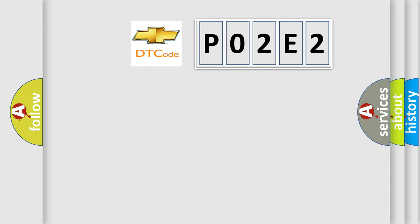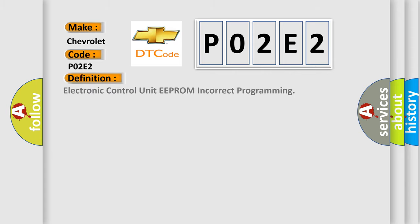So, what does the diagnostic trouble code P02E2 interpret specifically for Chevrolet car manufacturers? The basic definition is electronic control unit EEPROM incorrect programming.